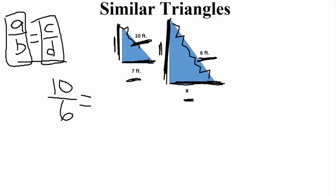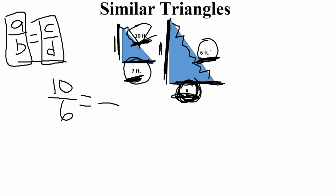Then we set that equal to another fraction made up of what we need to solve for. The x is on the bottom side of the triangle, so I need to take both bottom sides of the triangle. Since I chose to plug in ten over six — small triangle to big triangle — when plugging in the bottom measurements I also need to go small to big. So ten is to six as seven is to x. That's exactly how we set up our proportion: similar side to similar side of information we know, and similar side to similar side of what we need to solve for.